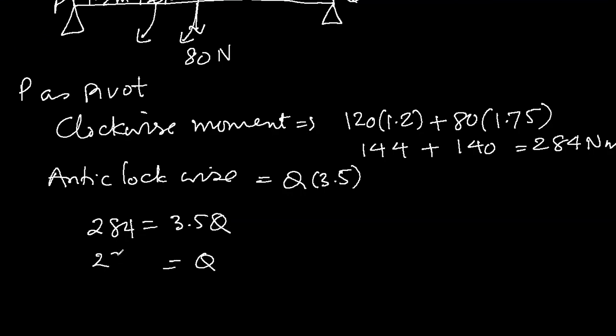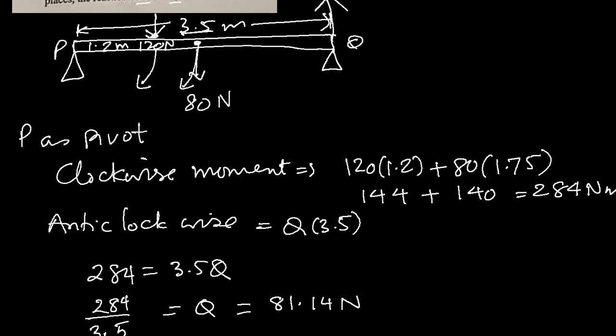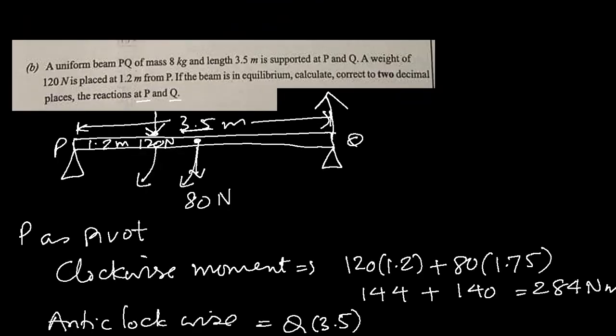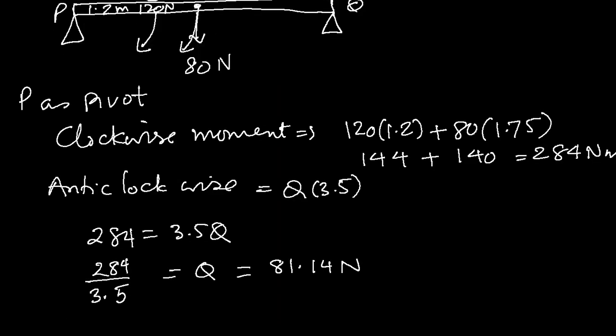For equilibrium they have to be equal, so 284 equals 3.5Q, and Q will be 284 divided by 3.5, which is 81.14 newtons. They want two decimal places, so 81.14 newtons.